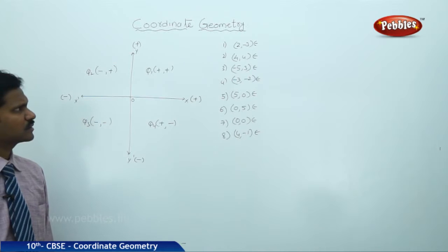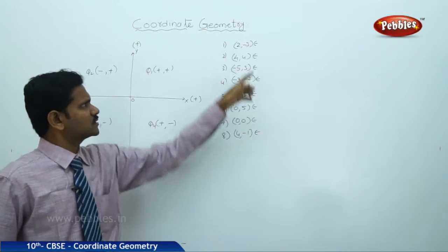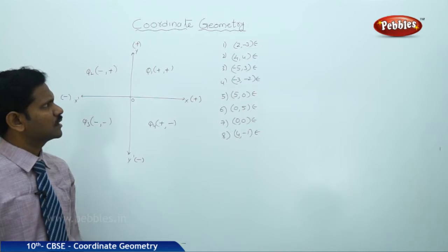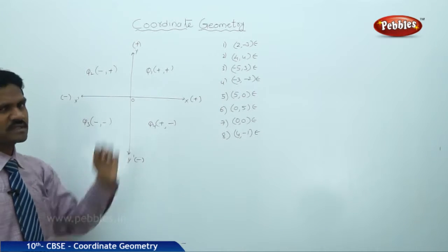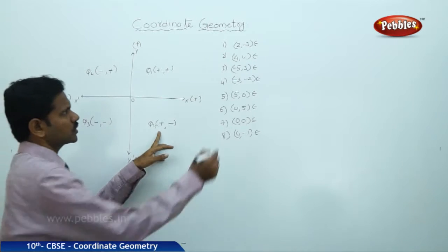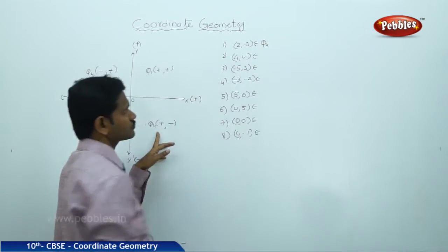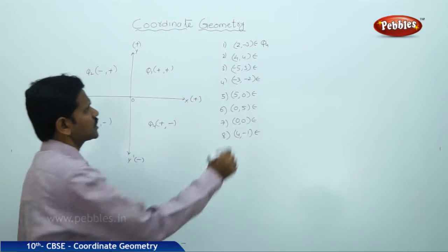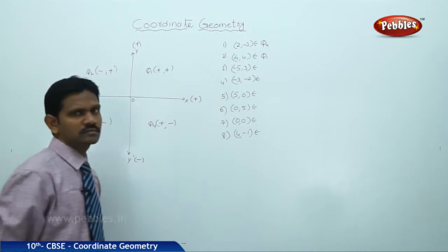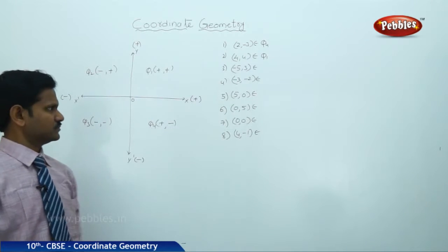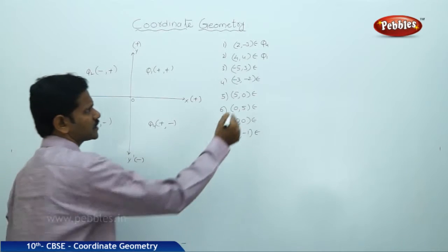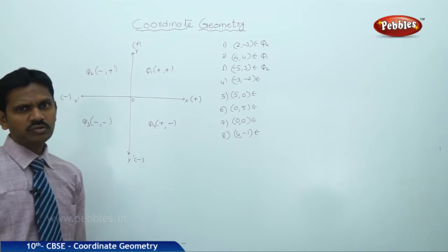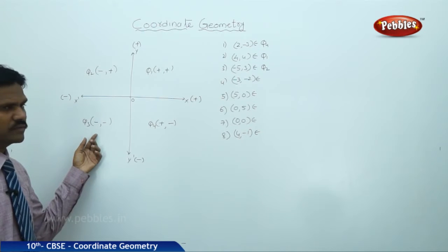For (2, −3): 2 is positive and 3 is negative, so plus-minus belongs to Q4. For (4, 4): both are positive, so it belongs to Q1. For (−5, 3): minus-plus belongs to Q2. For (−3, −2): both values are negative, which belongs to Q3.